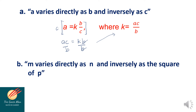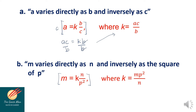Another example: M varies directly as N and inversely as the square of P. In symbol, M is equal to K times N all over P squared. To solve for K, multiply both sides by P squared to get M times P squared equals K times N, then divide both sides by N, so K is equal to M times P squared all over N.